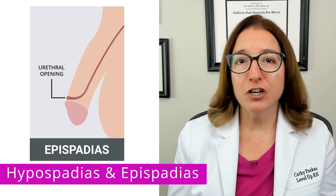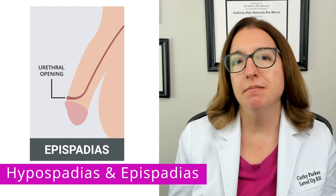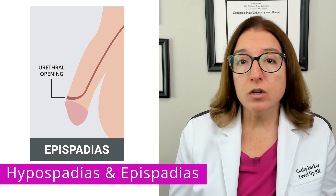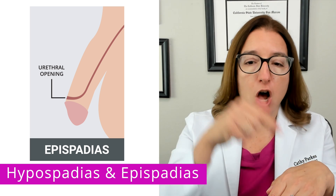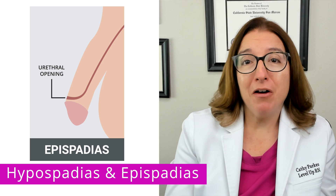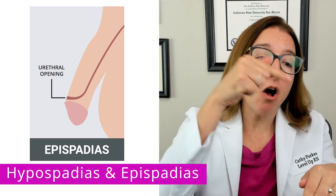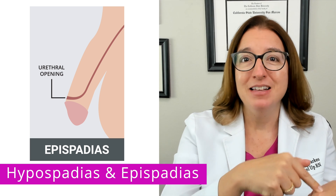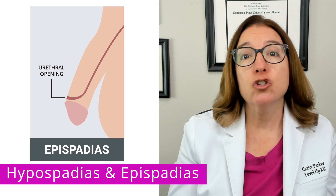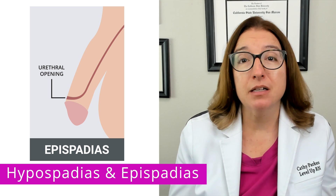Epispadias can occur in males and females, but it is much more common in males. With this disorder, the urethral opening is on the dorsal surface or on top of the penis. Epi means upon or on, so the urethral opening is on top of the penis. In addition, a short, wide penis and abnormal curvature is typically present.